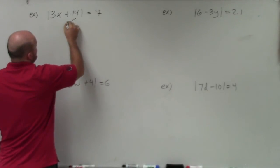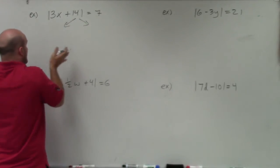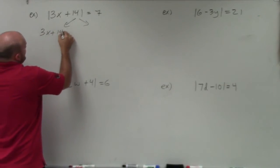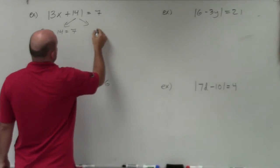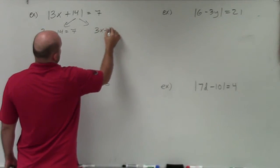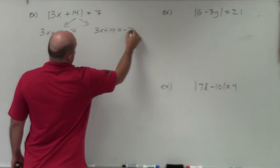The main important thing is getting in your brain focused on setting up your two solutions. The positive solution, 3x plus 14 is equal to 7, as well as the negative solution, which is 3x plus 14 equals negative 7.